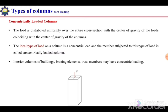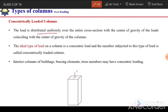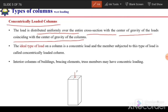Next are the types of columns with respect to loading. There are two types: concentrically loaded columns and eccentrically loaded columns. In a concentrically loaded column, load is distributed uniformly over the entire cross section with the center of gravity of the loads coinciding with the centroid of the column. This is the ideal case — the load is acting at the centroid of the column — and the member subjected to this type of load is termed a concentrically loaded column.